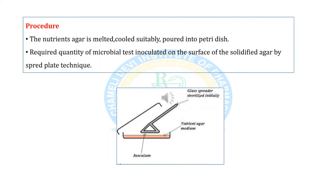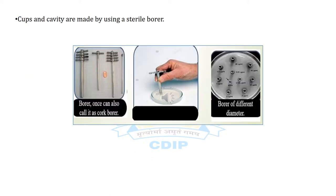Now we come to the procedure of the cup plate method. Nutrient agar is melted, cooled suitably, and poured into a petri dish. The required quantity of microbial test organism is inoculated on the surface of the solidified agar by spread plate technique. Cups and cavities are made using a sterile borer, which is an instrument used for making holes in the agar plate.